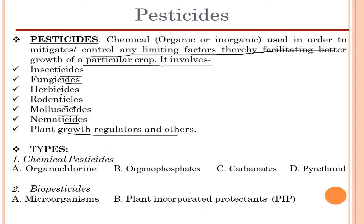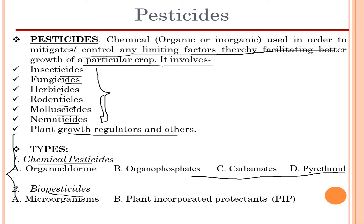These pesticides help kill insects, fungi, and other organisms that inhibit plant growth. There are two main types of pesticides: chemical pesticides and biopesticides. Under chemical pesticides we have organochlorines, organophosphates, carbamates, and pyrethroids. Under biopesticides we have microorganisms and plant-incorporated protectants (PIPs).